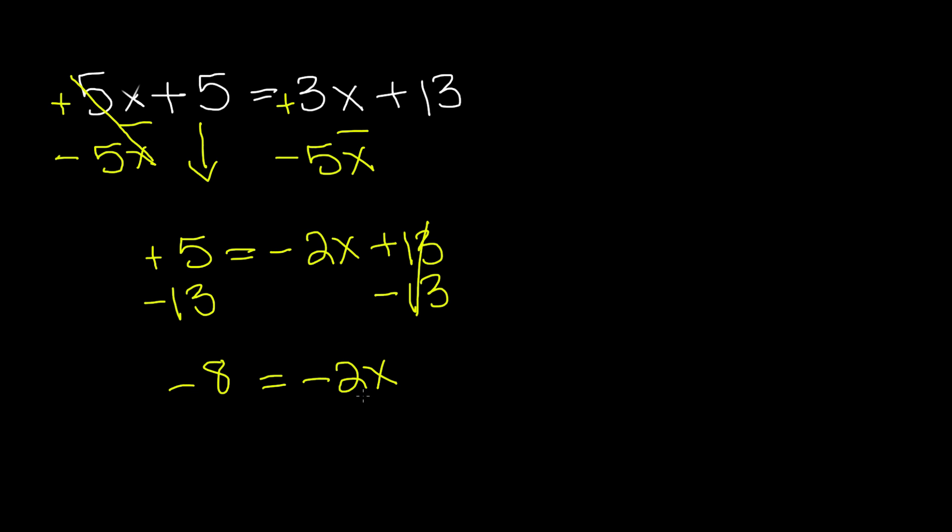Now since we're multiplying negative 2 by x, we're going to divide by negative 2 on both sides. So negative 2 and negative 2 cancel each other out so we're left with x is equal to 4 because negative 8 divided by negative 2 gives us 4.